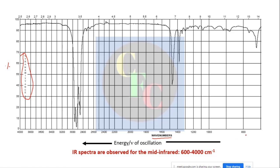Wavenumbers are increasing from right to left — the opposite direction — meaning energy is also increasing from right to left. Higher IR frequency is on the left-hand side and lower frequency is on the right-hand side of the spectrum. This is a conventional IR spectrum.